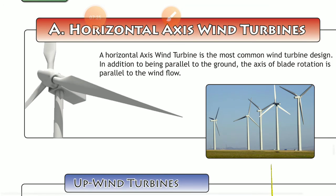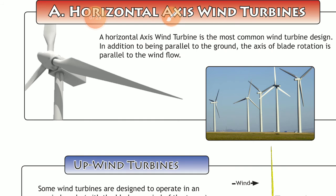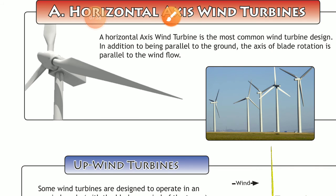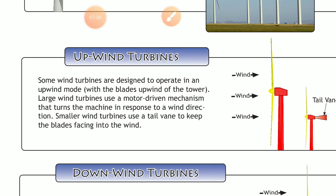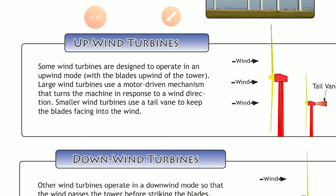Next, let's look at the types of horizontal axis wind turbines. Horizontal axis wind turbines generally have three blades and the rotation axis is parallel to the ground level. There are two categories: upwind and downwind turbines. Upwind turbines are designed to operate with the blades upwind of the tower. Large wind turbines use a motor-driven mechanism that turns the machine to face the wind direction, while smaller wind turbines use a tailwind mechanism to keep the blades facing into the wind.